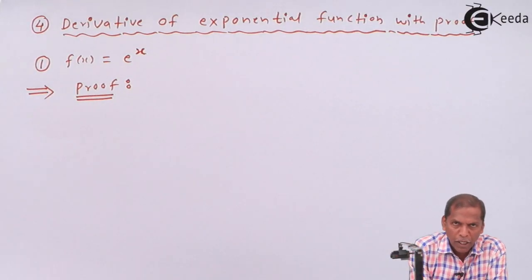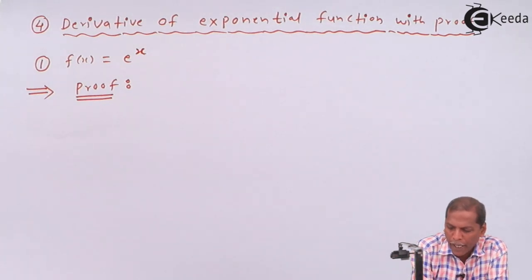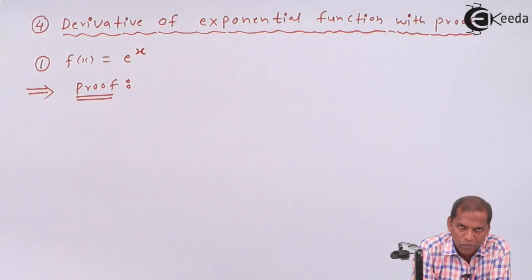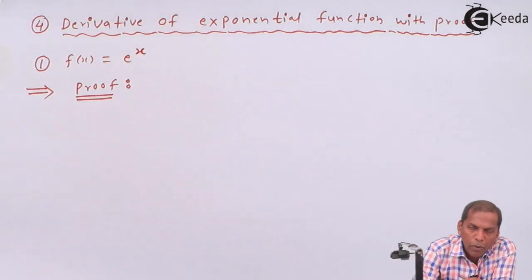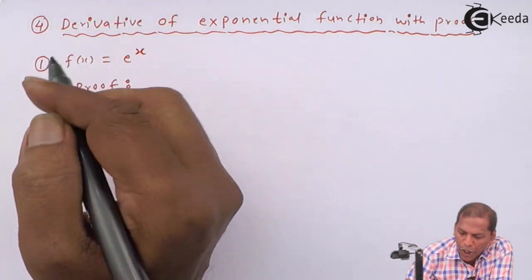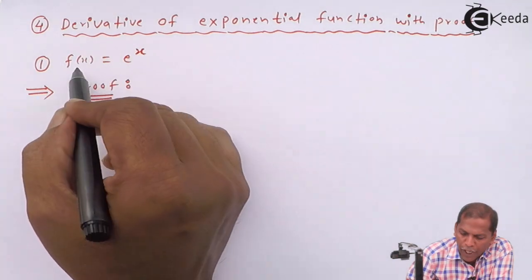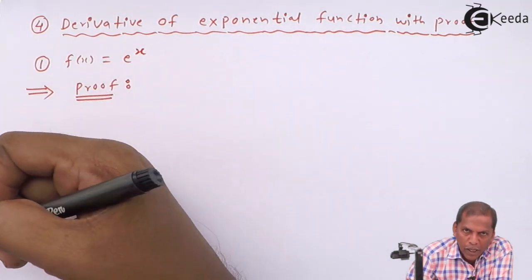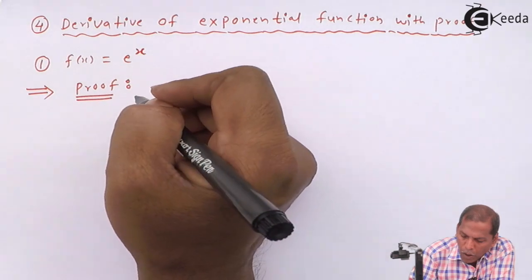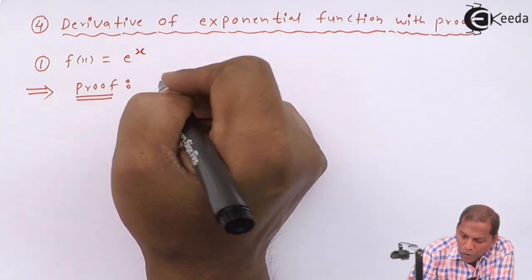Hello friends, now we see topic number four: derivative of exponential function with proof. Number one, we have to first see the proof of f(x) is equal to e raise x. Now let's see the proof.